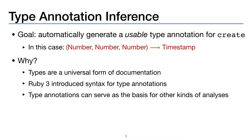Our goal is to automatically generate a type annotation for methods like create. And crucially, we want those annotations to actually be usable, meaning useful for the programmer. So in this case, we want to generate the type annotation that says the method takes three numbers and returns a timestamp, because this is the annotation that the developers wrote down.